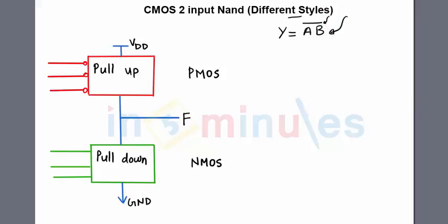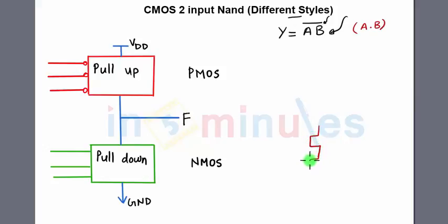Hide the bar. Whatever is underneath the bar — in this case A and B — is nothing but the pull-down circuit, a combination of NMOS transistors used as the pull-down network. So under the bar is A and B, meaning my pull-down network comprises one transistor for input A in series with B.